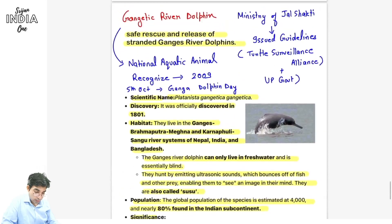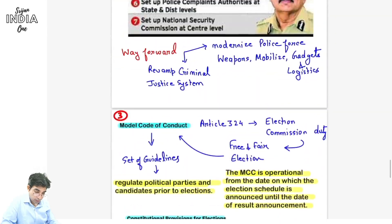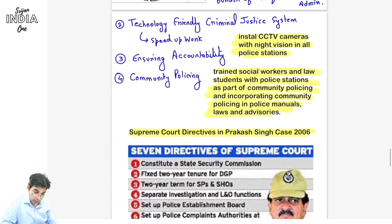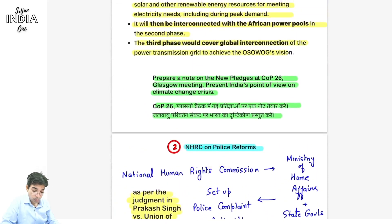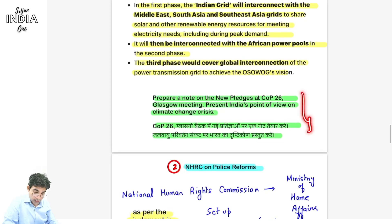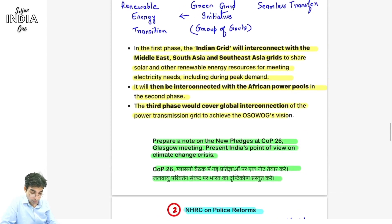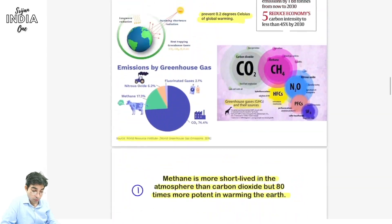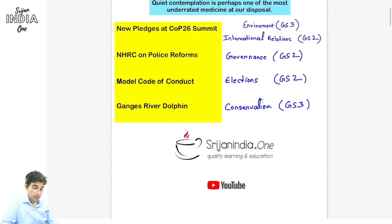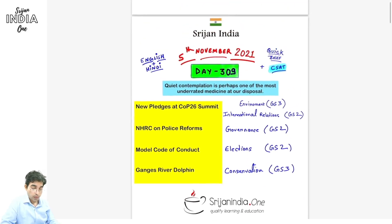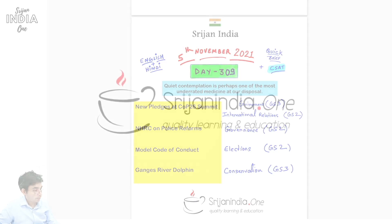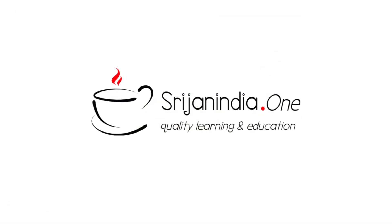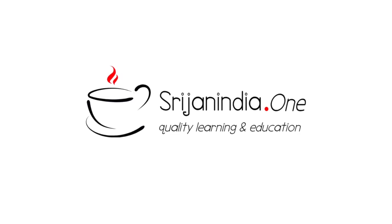Toh aaj humne 4 topics dekhe: Gangetic River Dolphin, Model Code of Conduct and Elections in India, NHRC and Police Reform, aur COP26 ki nayi pledges - is pe ek note prepare kariye aur India ka point of view bhi bataiye. This is 5th of November 2021. Thank you so much for watching this video. Take care, study well and be safe. I'll see you guys next time.